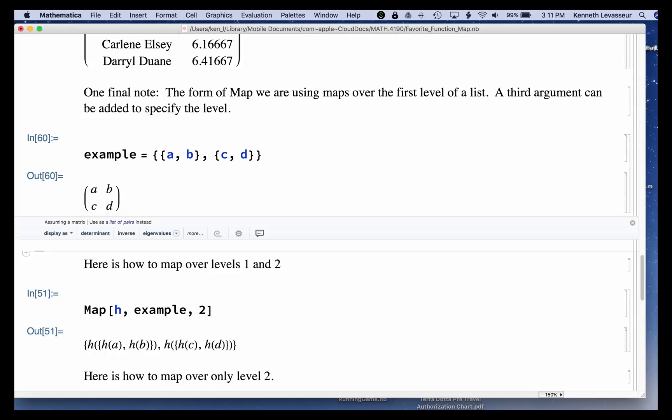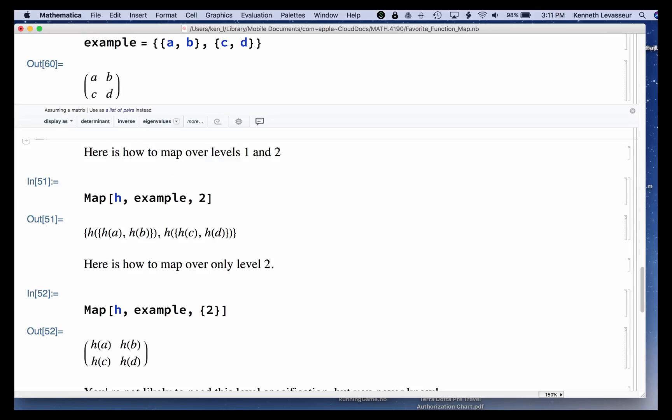it maps h over the two lists in the example, but also goes down to the next level and applies h to the individual items in the list. So I get h of a, h of b, h of c, and h of d inside here.